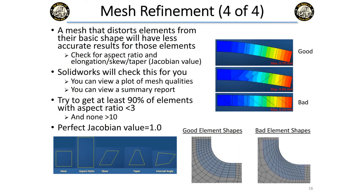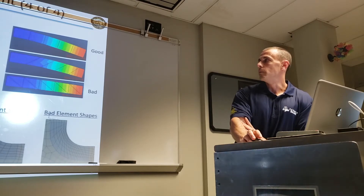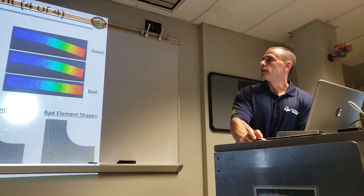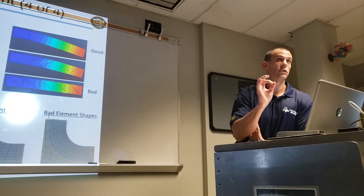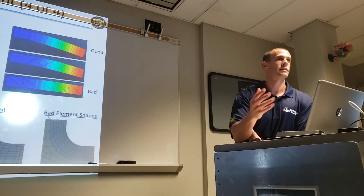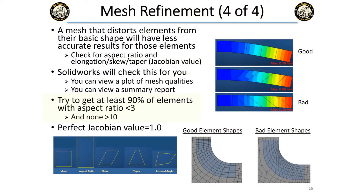Your results can vary quite a bit based on element shape. This is quantified by the Jacobian value — a perfect element has a Jacobian of 1.0, and anything less than that is bad. SolidWorks will check your mesh quality for you; you can even view a plot of mesh qualities and get a summary report. You should always do this. Note this applies to solid meshing — for beam elements this doesn't apply since there's no 3D meshing. The goal is at least 90% of your elements with an aspect ratio less than 3.